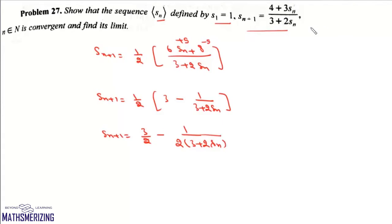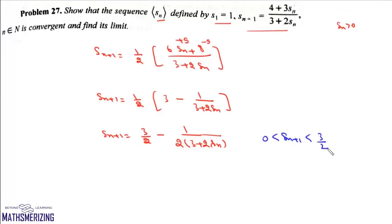Any term in the sequence is greater than zero, so we can write Sₙ₊₁ > 0 and Sₙ₊₁ < 3/2. Therefore this sequence is a bounded sequence.